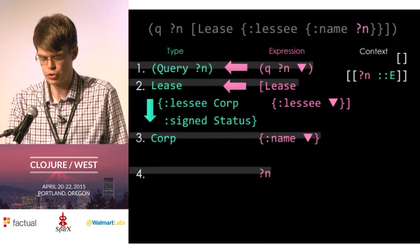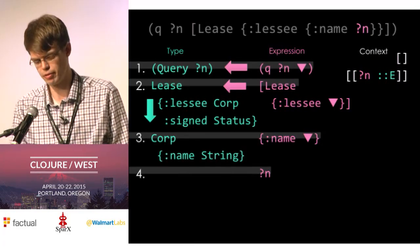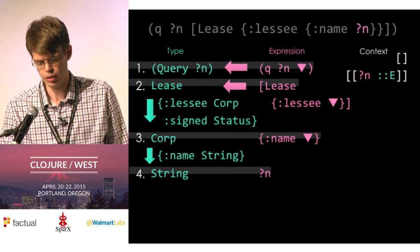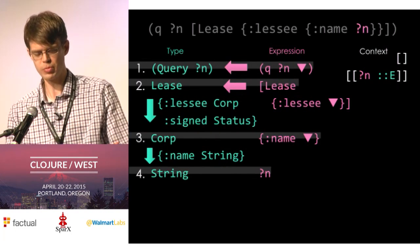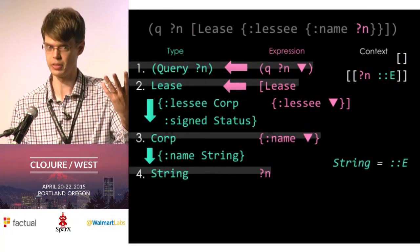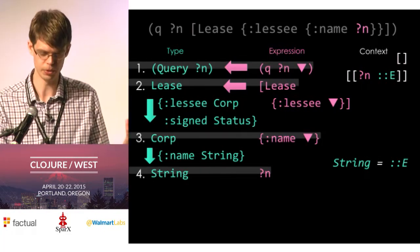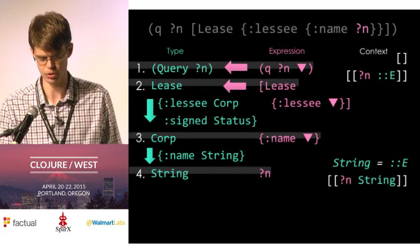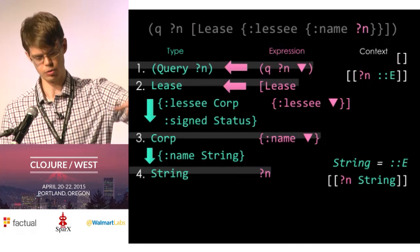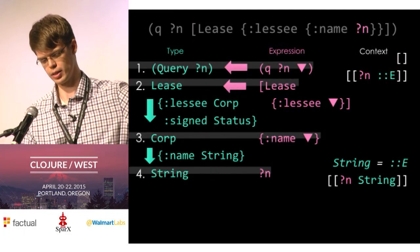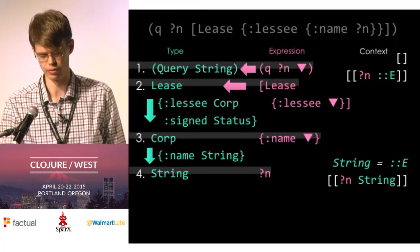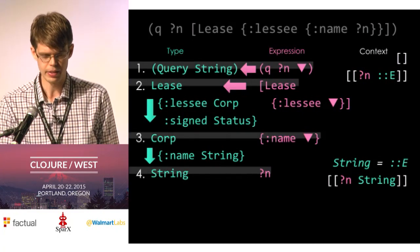Then we expand the name field of corporation, follow it to the next sub-expression, and hit a variable. Looking at the variable, we don't know its type, so we expand the definition of the parent type, follow the field, and realize it should be string. Our type system now claims n should be string. We look n up in context and see it's still existential — compatible with string — so we update the context to say n equals string. The recursive function bubbles back up with our updated context, and we update the query to be of type string.